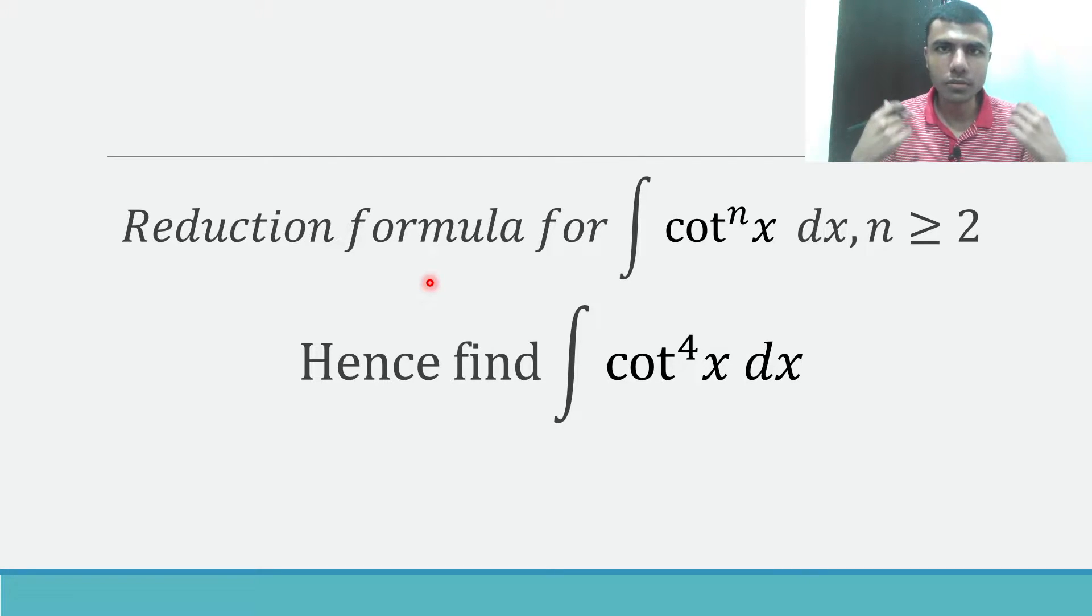Now let's see how to find out this given question. Here I need to find out the reduction formula for integral cot power n x dx wherein n is greater than or equal to 2. Once I found out that formula, I need to find out integral cot power 4 dx using the reduction formula which I got.